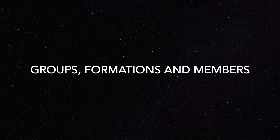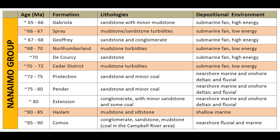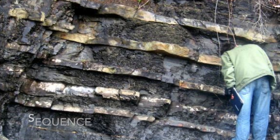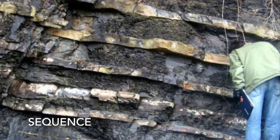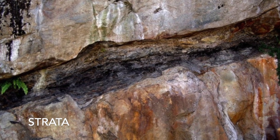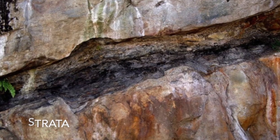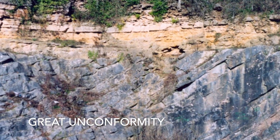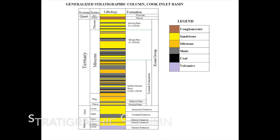Sedimentary sequences are classified into groups, formations, and members so they can be referred to easily without confusion. A sequence is a layer of rock distinct from layers above and below it, also known as strata. Strata are bound by non-deposition or erosional surfaces known as unconformities — like a gap of missing time in the rock record, some spanning up to a billion or more years, like the Great Unconformity of the United States.